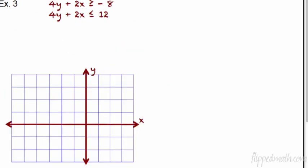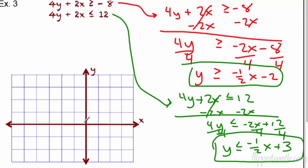Example three: 4y plus 2x is greater than or equal to negative 8, and 4y plus 2x is less than or equal to 12. You can see some similarities here. Pause the video and solve each for y, then we'll graph them. After solving, I get y is greater than or equal to negative one-half x minus 2 — subtract 2x and divide by 4.